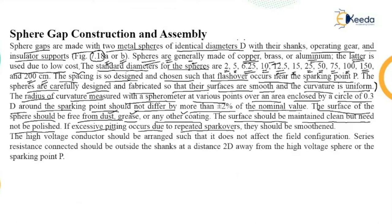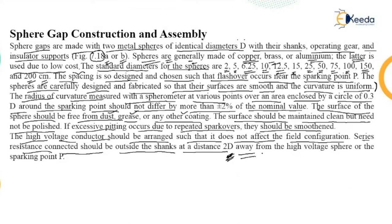The surface should be maintained clean but need not be polished. If excessive pitting occurs due to repeated spark overs, it should be smoothed. The high voltage conductor should be arranged such that it does not affect the field configuration. The series resistance connected should be at a distance of at least twice D — the diameter of the sphere — from the high voltage sphere or the sparking point P.